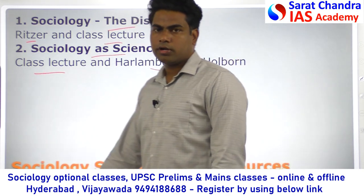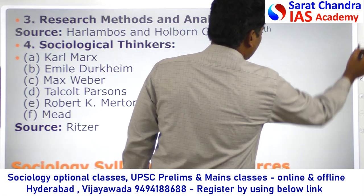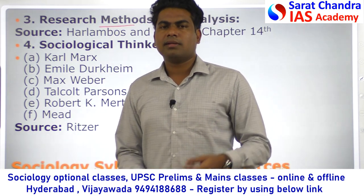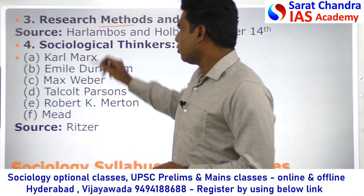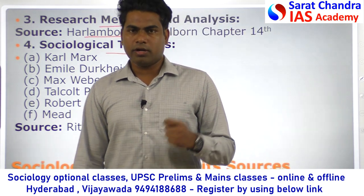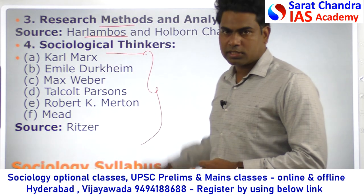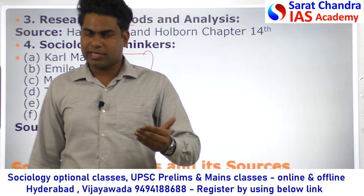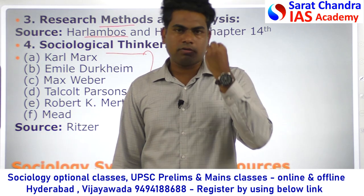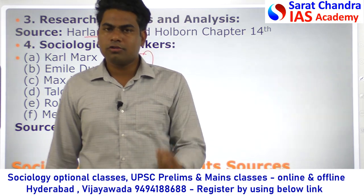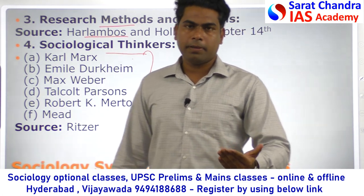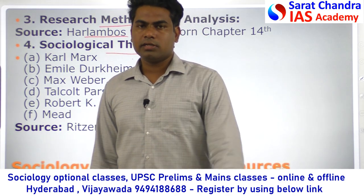The next topic is research method and analysis — nothing but how sociological research is conducted and the methodology used. The source is Haralambos and Holborn. Next is sociological thinkers — this is the Bible of Paper 1. To understand Paper 1, we require sociological thinkers because they have done systematic study on society, given us frameworks, conceptual tools, and deeper insights into Sociology as a discipline. This is the most important part of Paper 1, and if you cover thinkers, you cover everything.